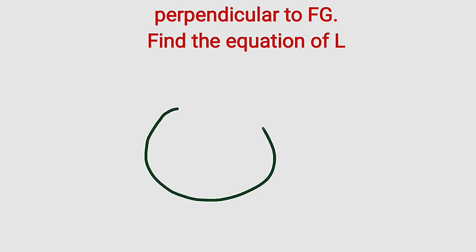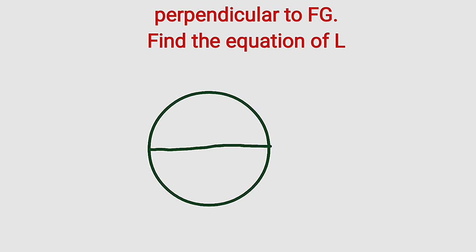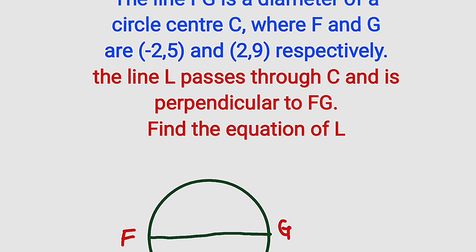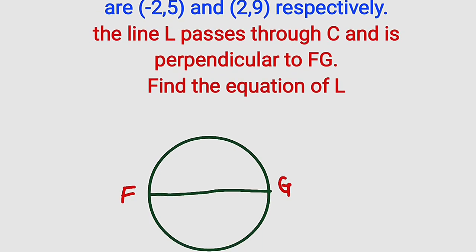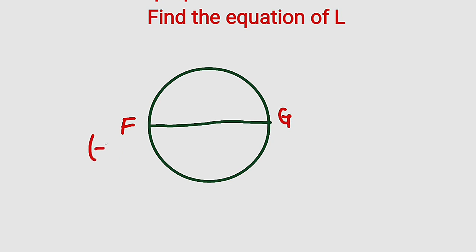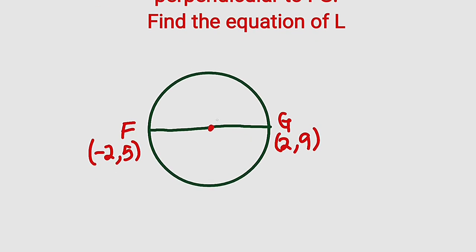Suppose we have a circle like this, and it happens that this is the diameter of that circle, which has the points F and G. Remember, the coordinate of F is (-2,5) and that of G is (2,9). So we have (-2,5) here and we have (2,9) on the other side. If this is the center of this circle, according to the question, another line passes through the center of this circle and the line is perpendicular to the line FG.